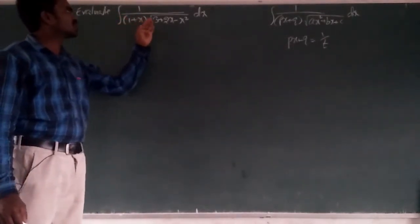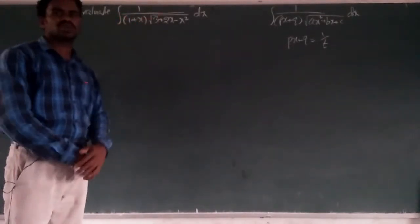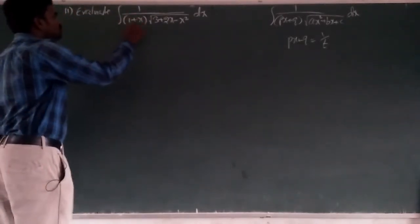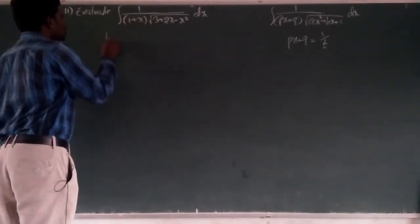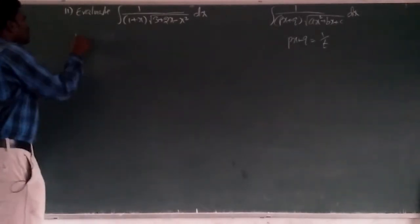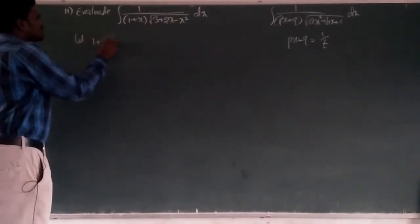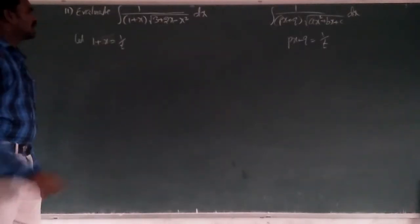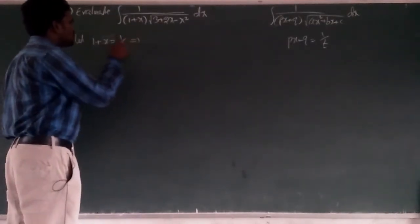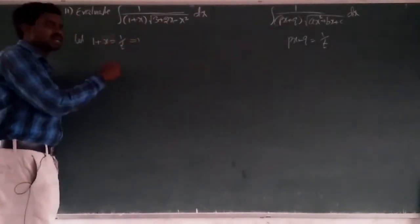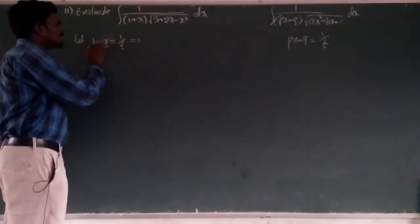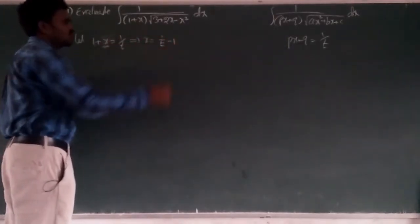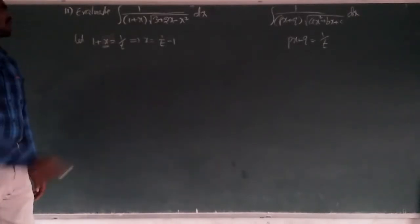The question is: ∫ 1/((1 + x) · √(a + 2x − x²)) dx. So what we have to argue? Let 1 + x = 1/t. By taking 1 + x = 1/t, x becomes 1/t − 1.